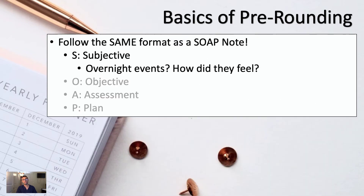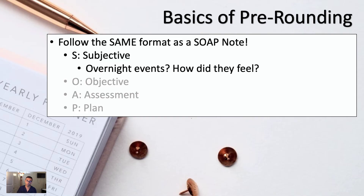Now let's start with the four aspects. You've created your one-liner and now you've got to work at 6 a.m. The first thing you're going to do for the subjective aspect for every patient is see if anything happened overnight. If something happened overnight, how did it make them feel? And there's going to be someone who took care of them overnight, so you can ask what they did when that event occurred.